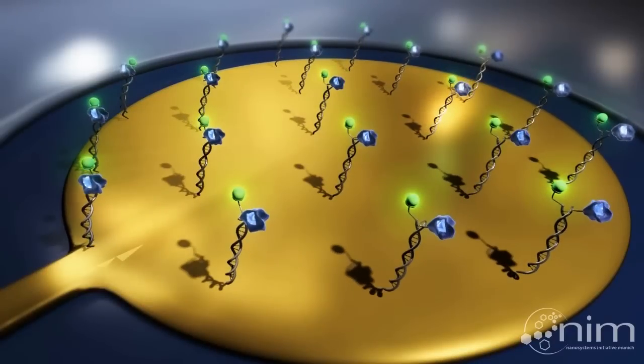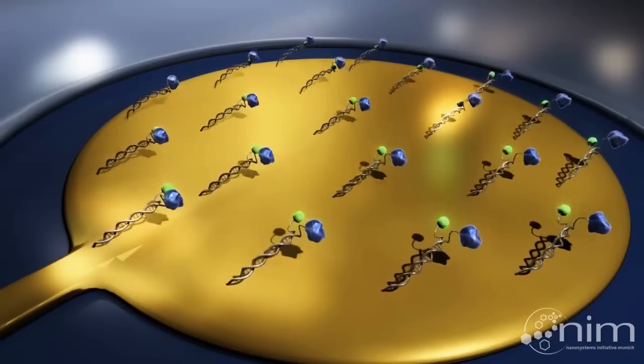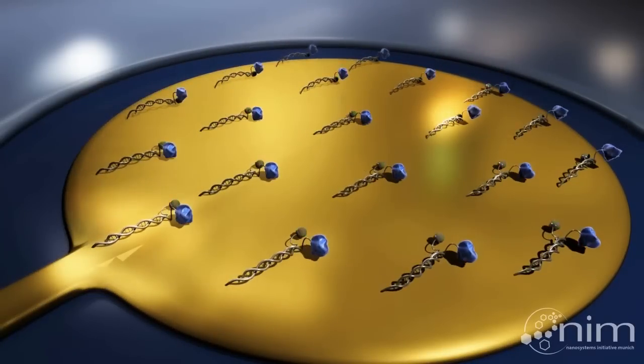One strand of each DNA molecule is modified with a green fluorescent marker. Whenever the DNA approaches the surface, the light emission is quenched by the gold electrode.